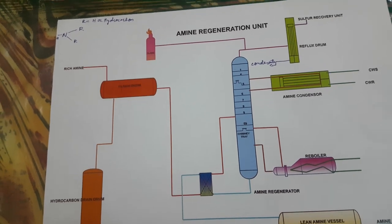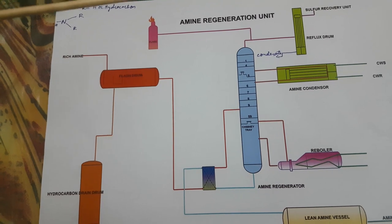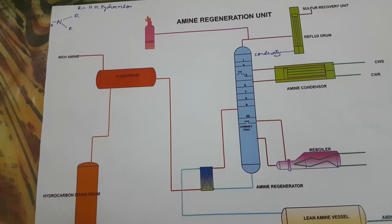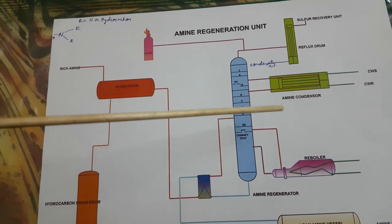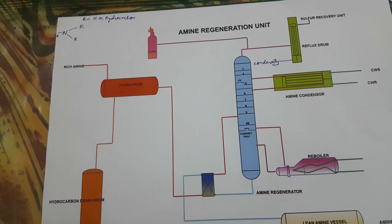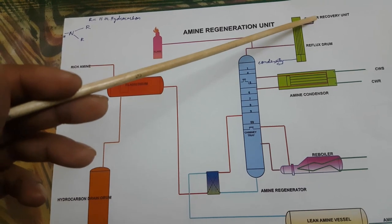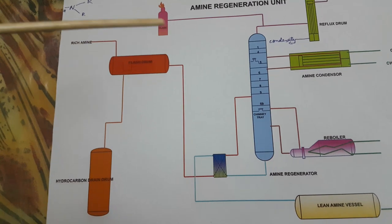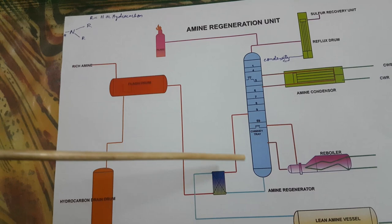Sour gas is the gas which contains a substantial or noticeable amount of hydrogen sulfide, carbon dioxide, and ammonia. Sweet gas does not contain hydrogen sulfide — it is free from hydrogen sulfide. The gas going from the overhead column to the sulfur recovery unit is sour gas. Sour gas is present in rich amine, whereas sour gas is not present in lean amine. This is the difference between lean amine and rich amine.